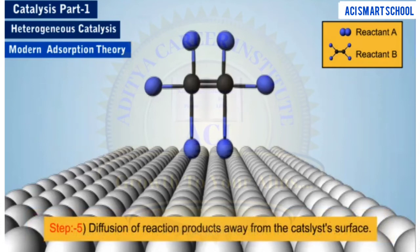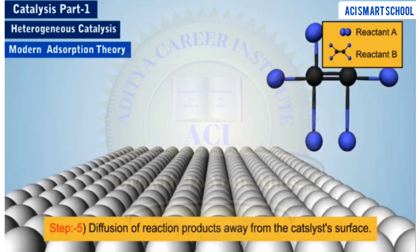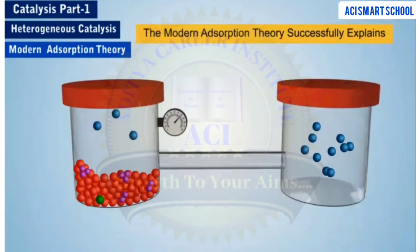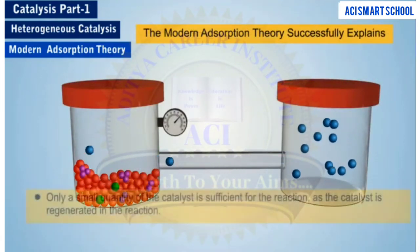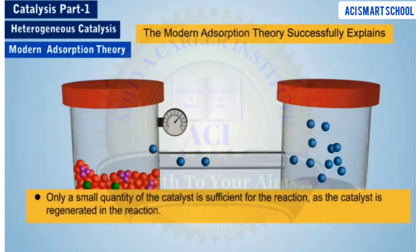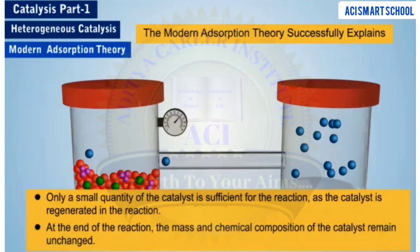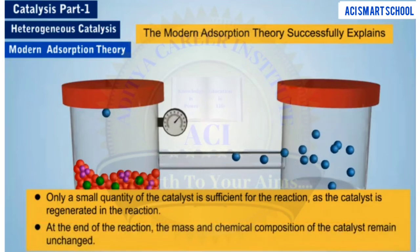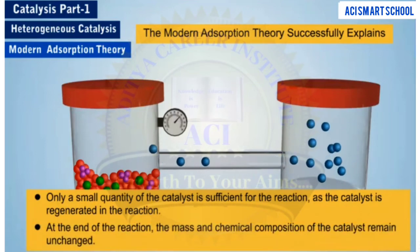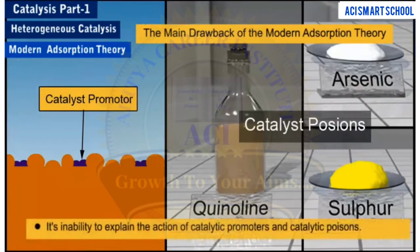The last step involves diffusion of the product molecules away from the surface of the catalyst. The modern adsorption theory successfully explains that only a small quantity of the catalyst is sufficient for the reaction, as the catalyst is regenerated in the reaction, and that at the end of the reaction, the mass and chemical composition of the catalyst remains unchanged. However, the main drawback of the modern adsorption theory is its inability to explain the action of catalytic promoters and catalytic poisons.